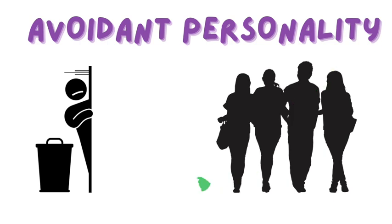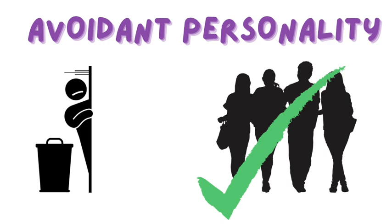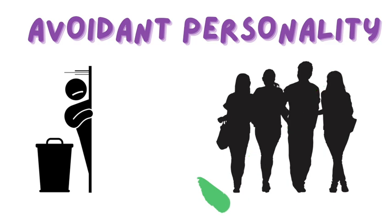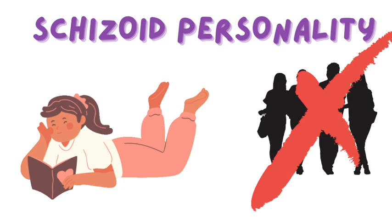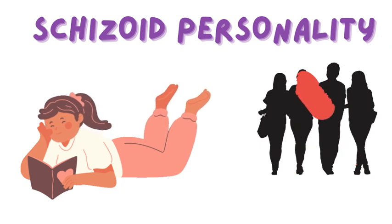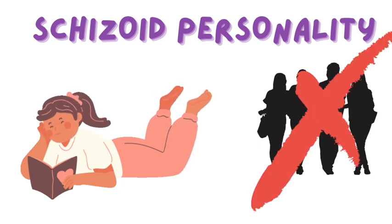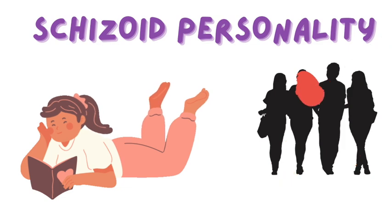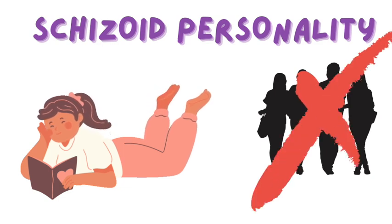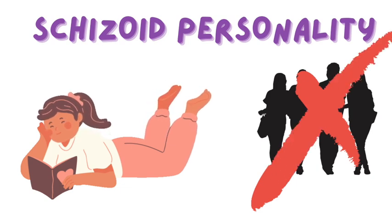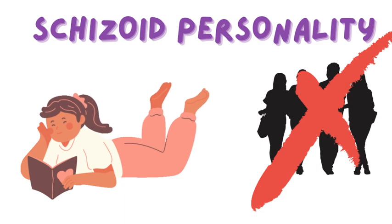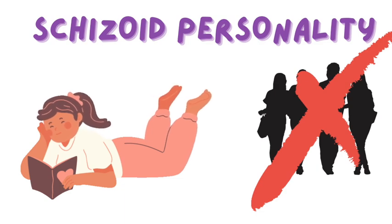This is very different from schizoid personality disorder. These are people that are alone and they want to stay that way. They don't want social relationships, they don't want sexual relationships, and they prefer activities that don't require them to interact with any other people. They also tend to have a very flat affect.